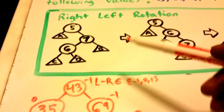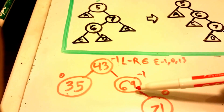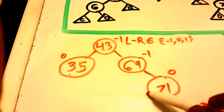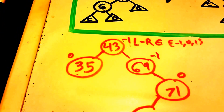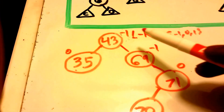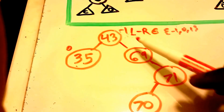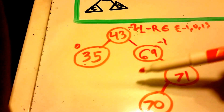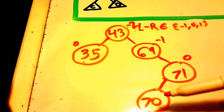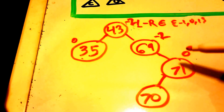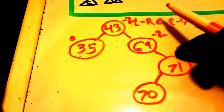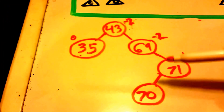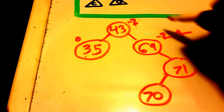Next let's insert the value 70. 70 is greater than 43, so we go right. 70 is greater than 69, so we go right again. 70 is less than 71, so we go to the left of 71, and we insert 70. Checking balance factors: node 43 has left height 1 and right height 3, giving negative two. Node 69 has left=0 and right=2, giving negative two. Node 71 has left=1 and right=0, giving one. Our tree is now unbalanced because of these two balance factors of negative two.